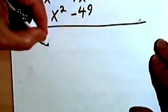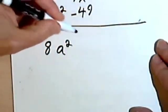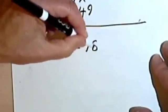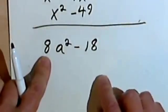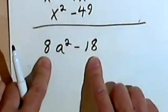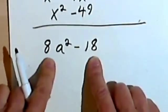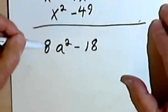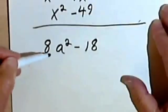So let's take 8a squared minus 18. Now 8 is not a perfect square and neither is 18. But before we just decide that we can't do this, let's try simplifying this by factoring out a common factor. Both of these numbers are even. So why don't we try factoring out a 2.